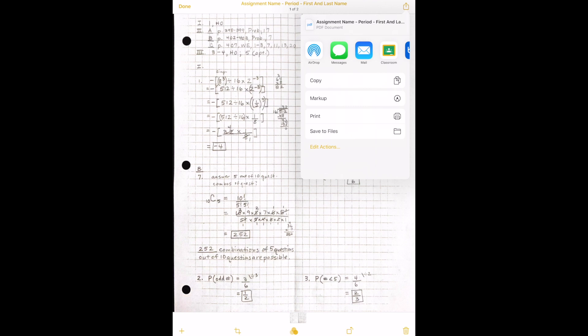So we have options of AirDrop, we can send it as a text, we could email it, we can send it to Google Classroom, which is where we definitely want it to go in this case, but you might want to send it to other places like Box. So once you click that, it'll send the file to where you want it to go, and that is it.